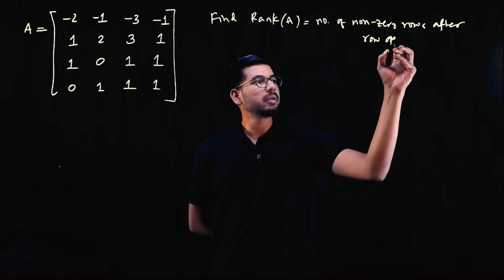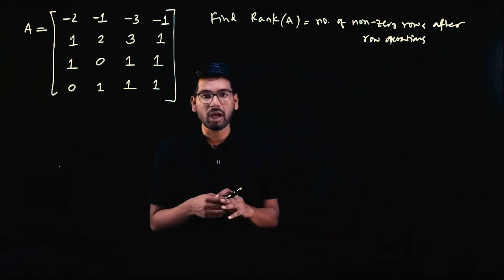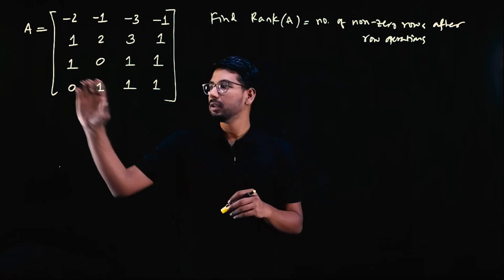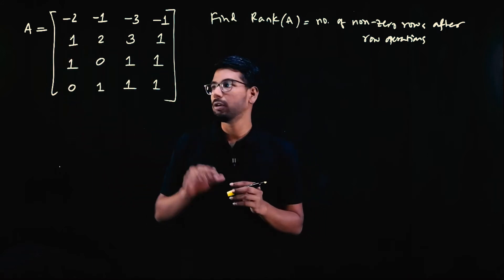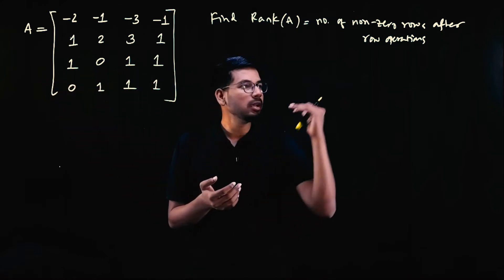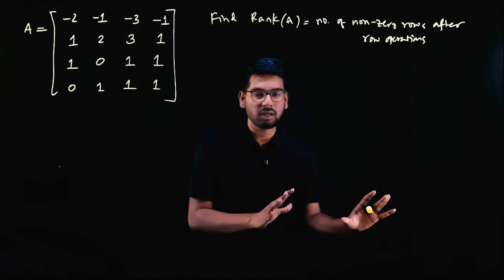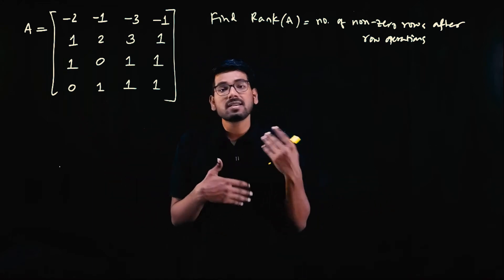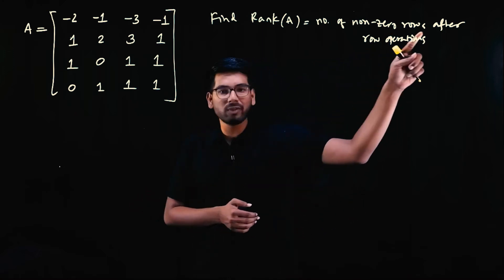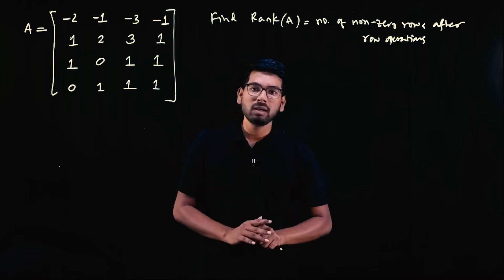First, we have to perform row operations to make the elements of the rows of the given matrix zero. Once we do some row operations, the number of non-zero rows remaining is the rank of the A matrix.